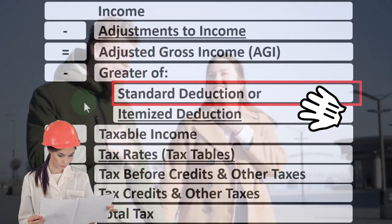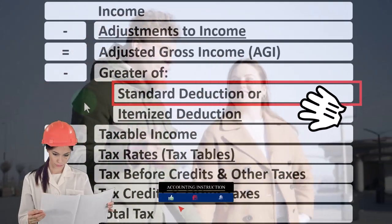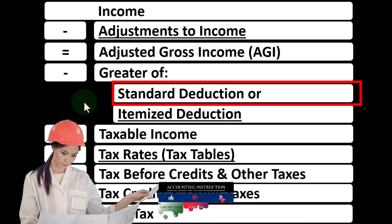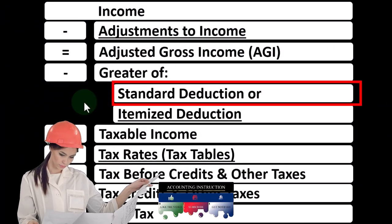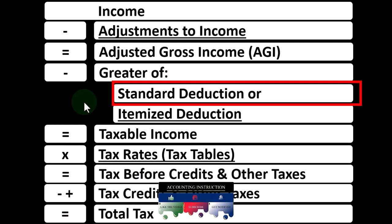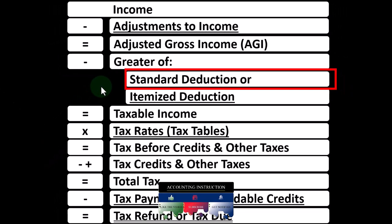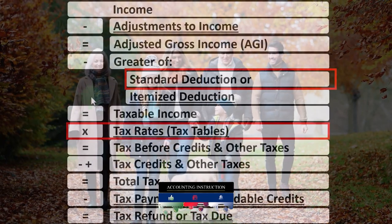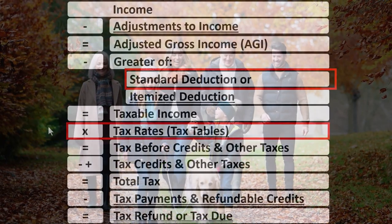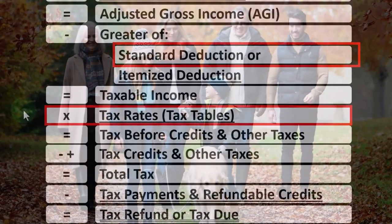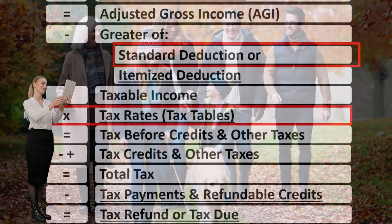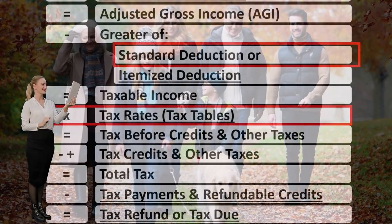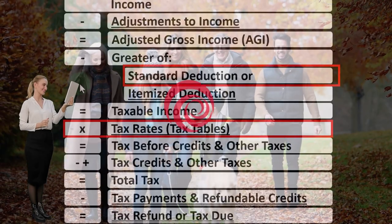However, having a change in dependents will not always have an impact on the standard deduction. For example, if we added another child, they're not going to move from head of household to another filing status past that point. Another area that could be impacted by dependents is the tax rates, and that will usually be tied to whether or not there was a change in filing status.